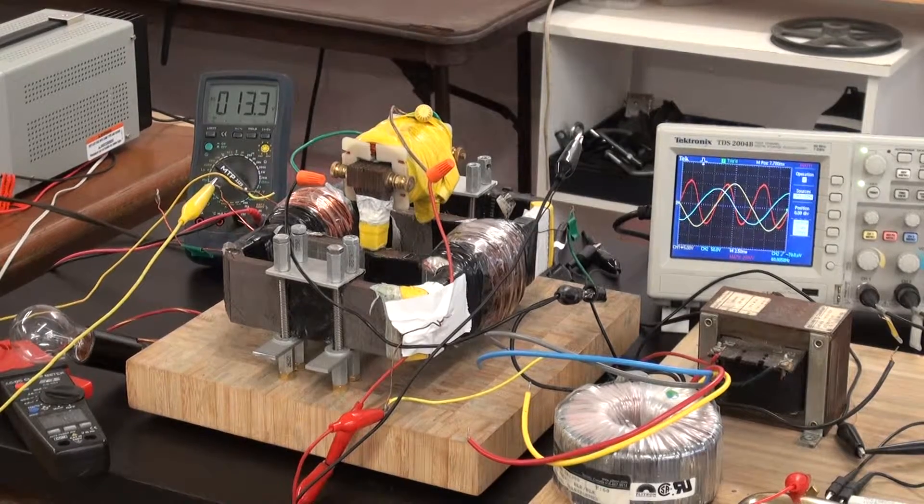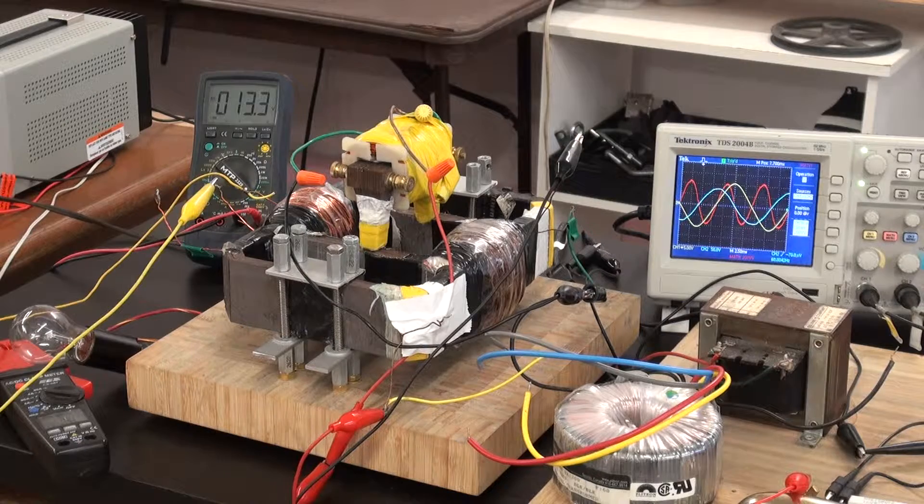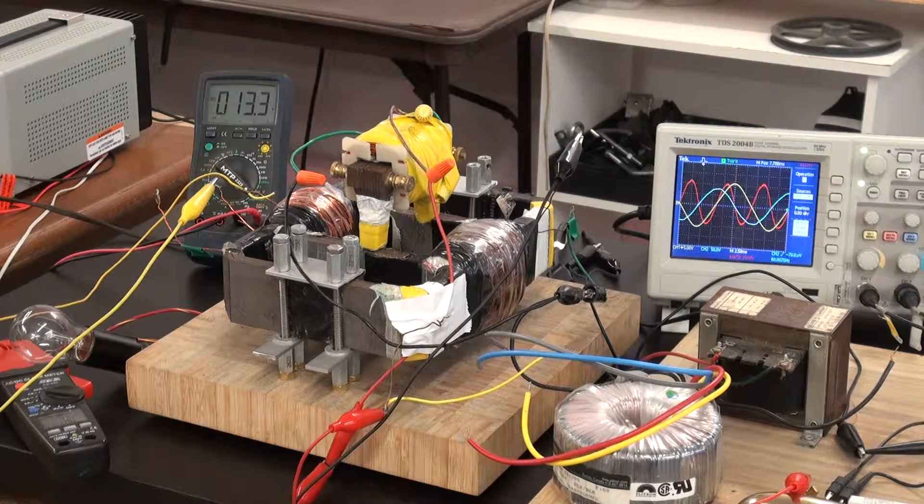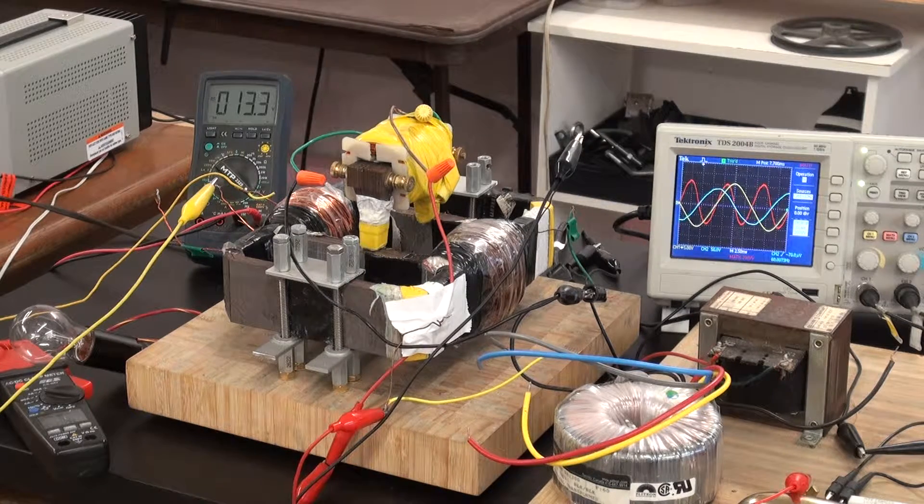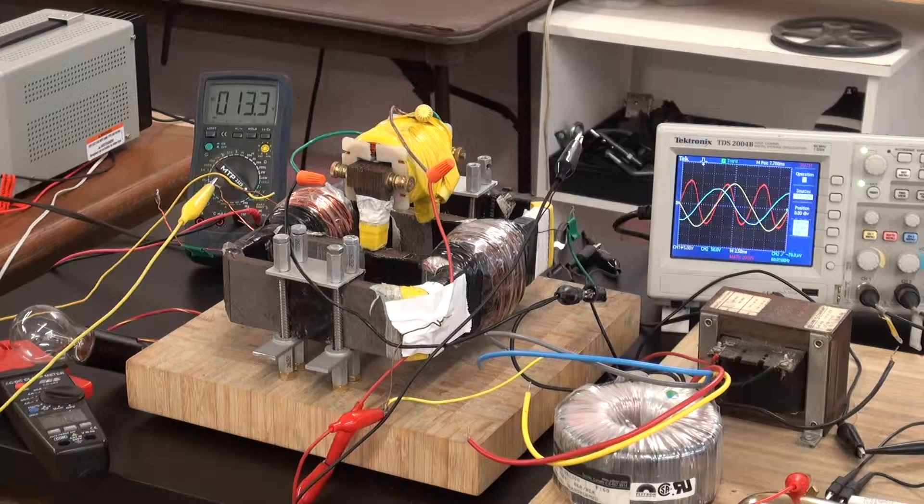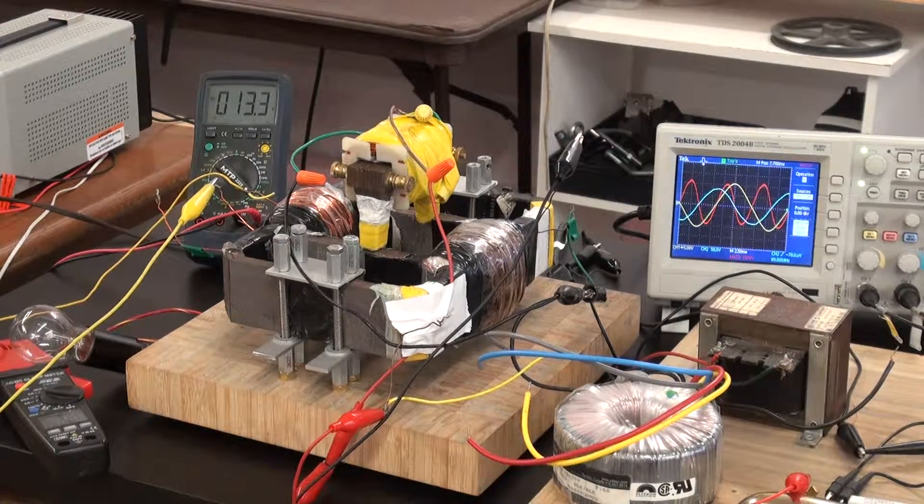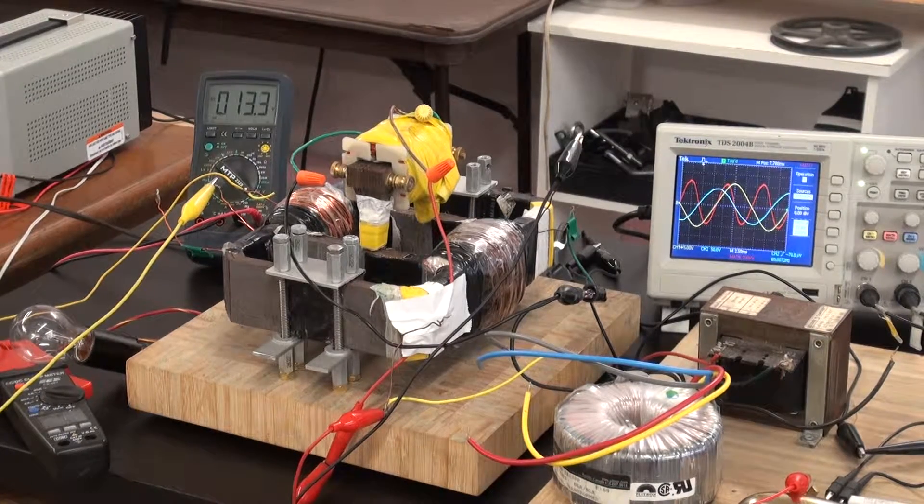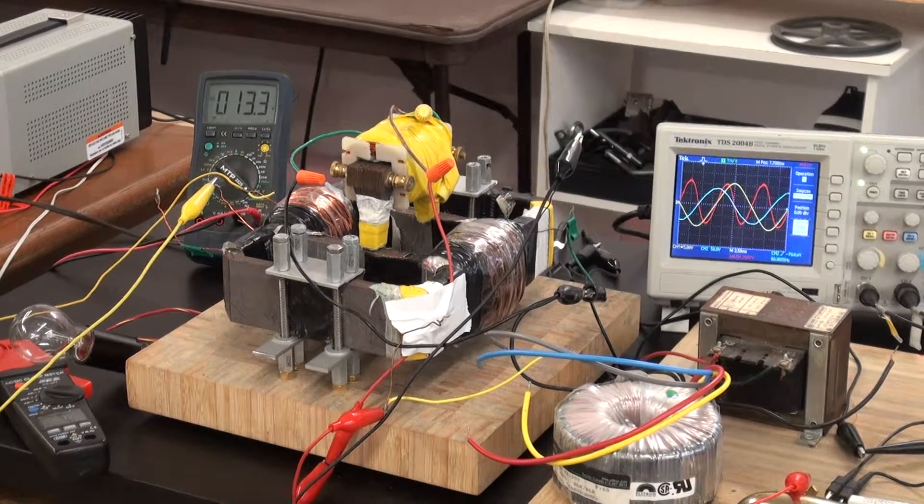So right now we have the bi-toroid transformer in operation. It is delivering 13.3 volts to a purely resistive load. We are delivering about 100 milliamps to our purely resistive load.